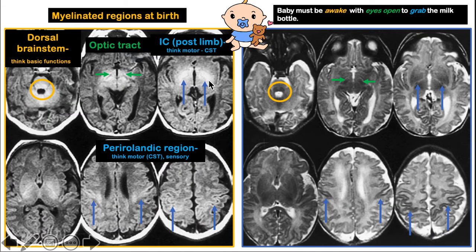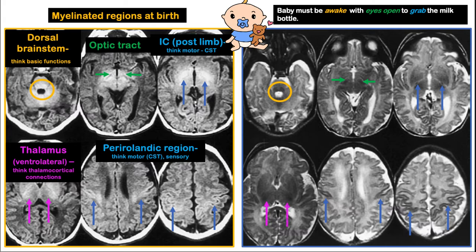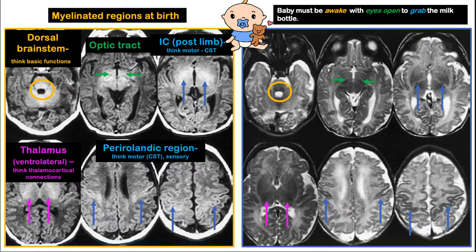The tract then descends in the cerebral peduncles. Another area myelinated at birth is the thalamus, with its thalamocortical connections, which are sensory and motor in function. The cerebellar peduncles are also myelinated at birth, associated with structures that control posture and movements in the newborn.